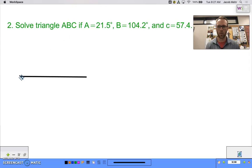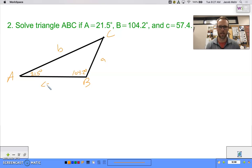Let's make one angle 21.5. The other one has to be 104.2. So this is actually going to be an obtuse triangle. So let's do something like that, where we call this A, this B, this C. So A is 21.5 degrees, B is 104.2 degrees, and let's label our sides A, B, and C, which is 57.4.